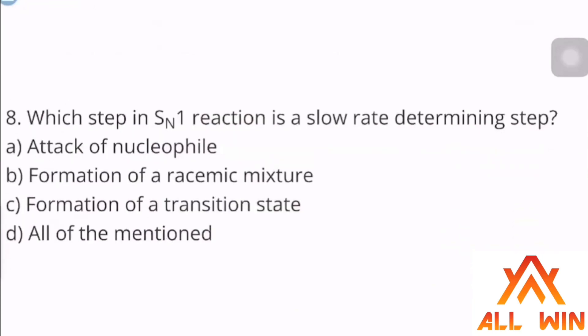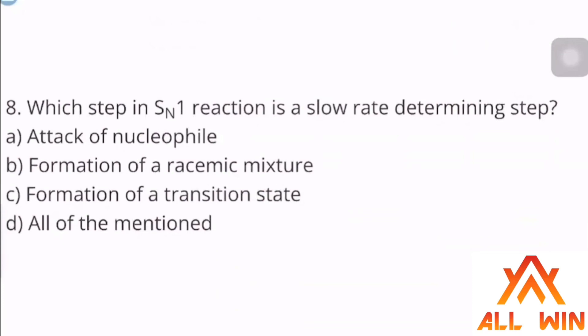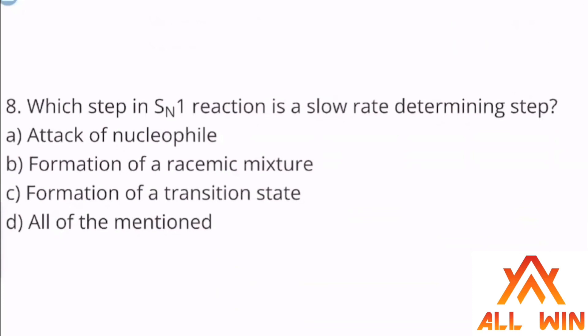Which step in the SN1 reaction is the slow rate-determining step? Step 1 — the formation of the carbocation — is the slow step. The attack of the nucleophile is the second step, which is fast.